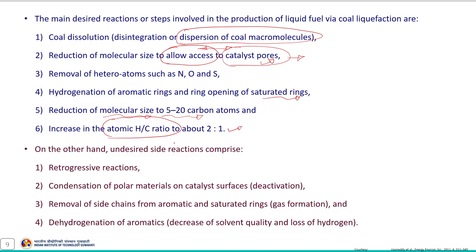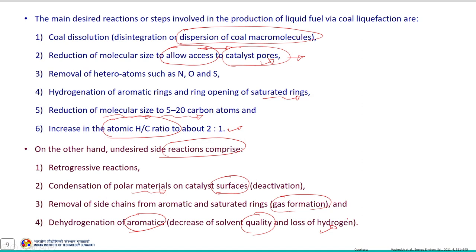Undesired side reactions include retrogressive reactions, which decrease oil or liquid yield; condensation of polar materials on the catalyst surface causing catalyst deactivation; removal of side chains from aromatic and saturated rings causing mostly gas formation; and dehydrogenation of aromatics, which decreases solvent quality and results in loss of hydrogen during the process.